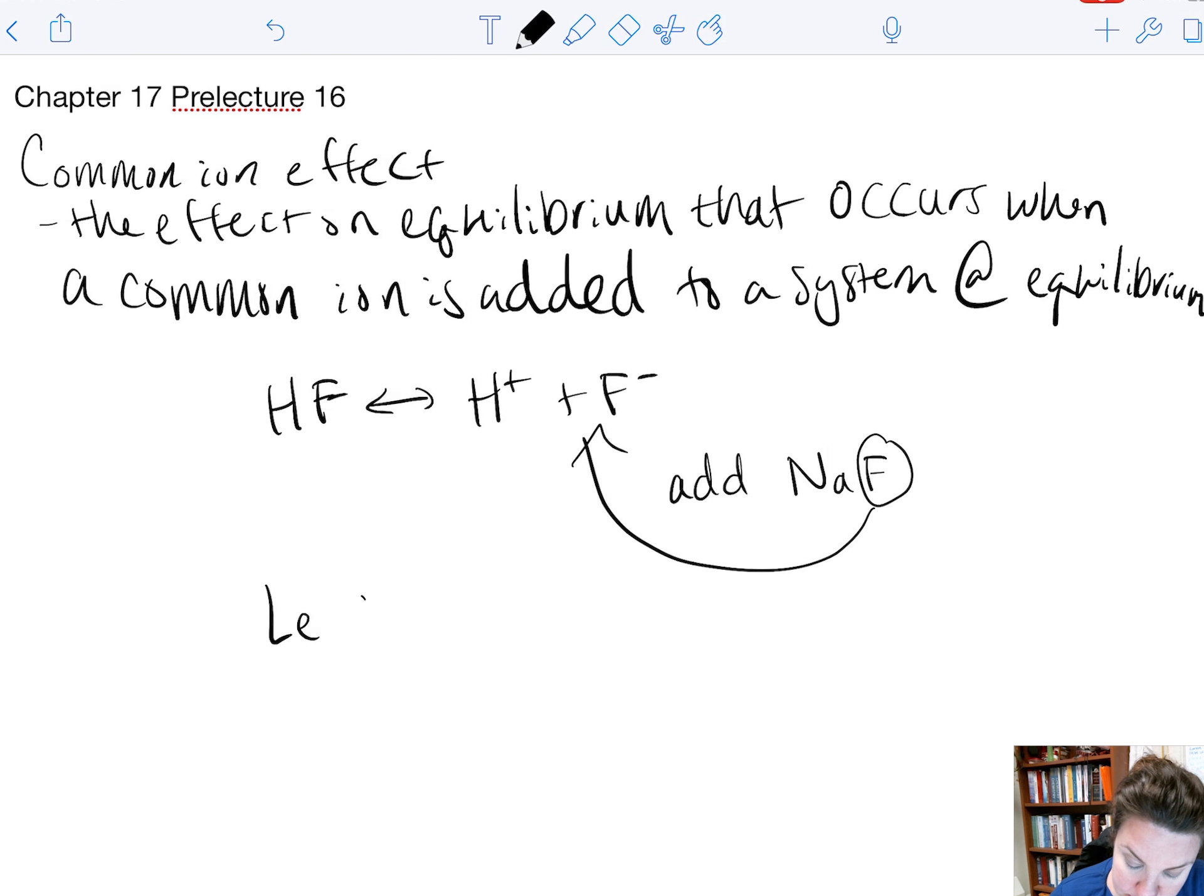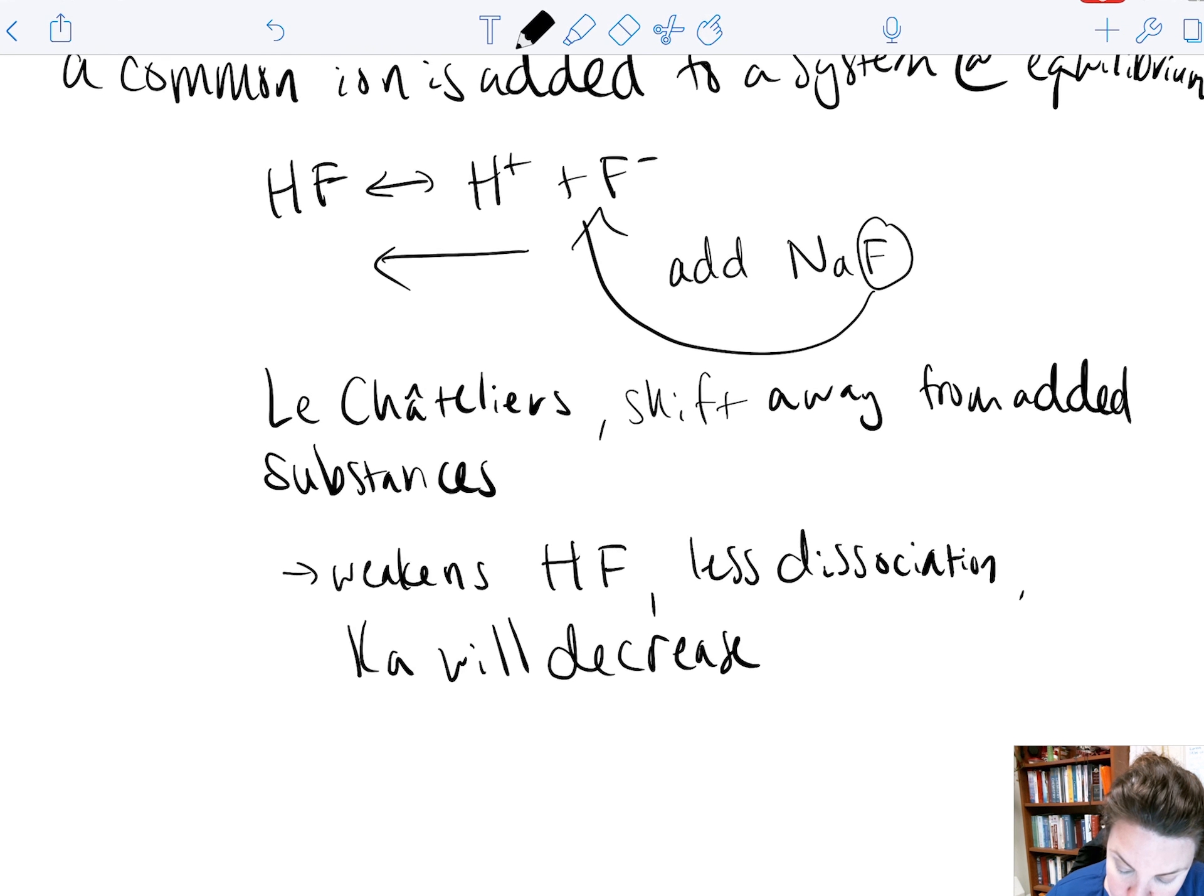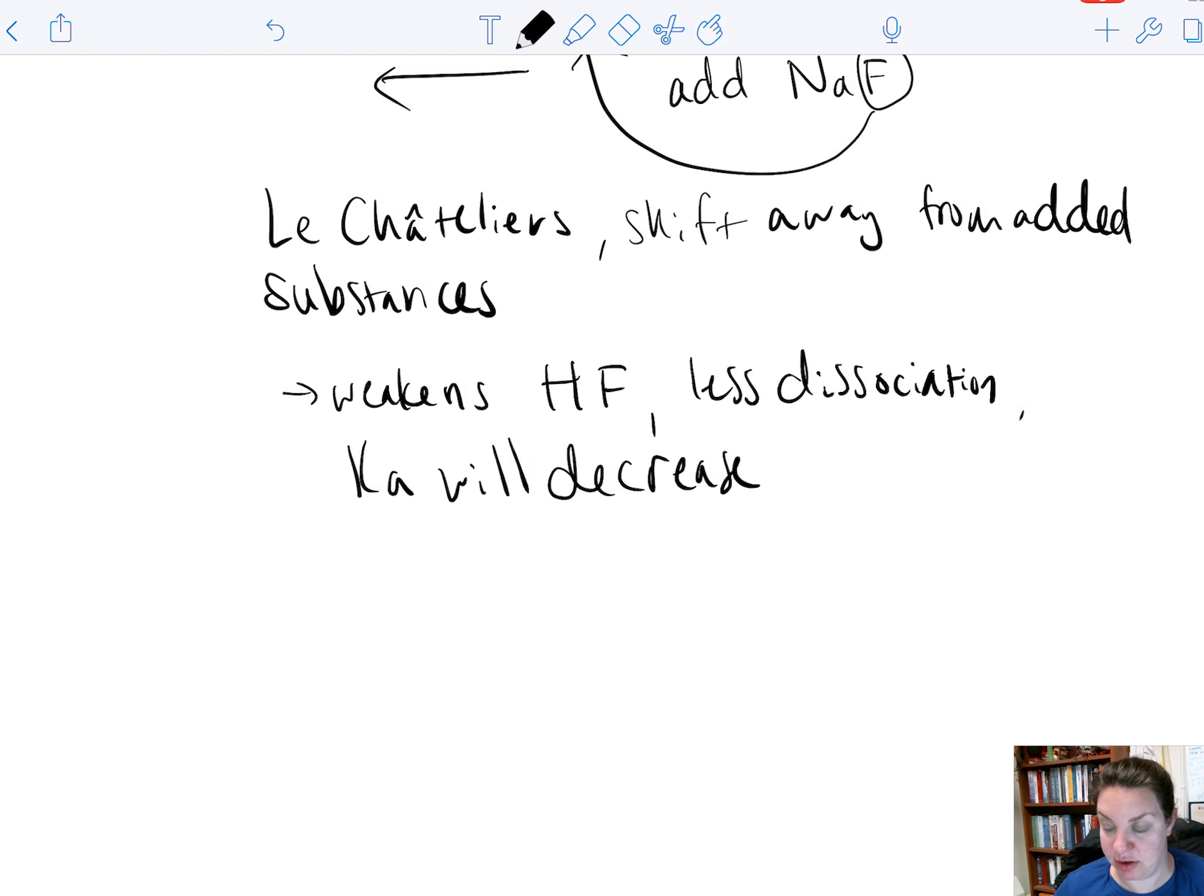And according to Le Chatelier's principle, we say that we are going to shift away from added substances. So we're going to shift, in this case, towards our reactants. So that means that we will actually have a lower, or this will weaken our acid. That's because there's less dissociation. So, in effect, Ka will decrease.